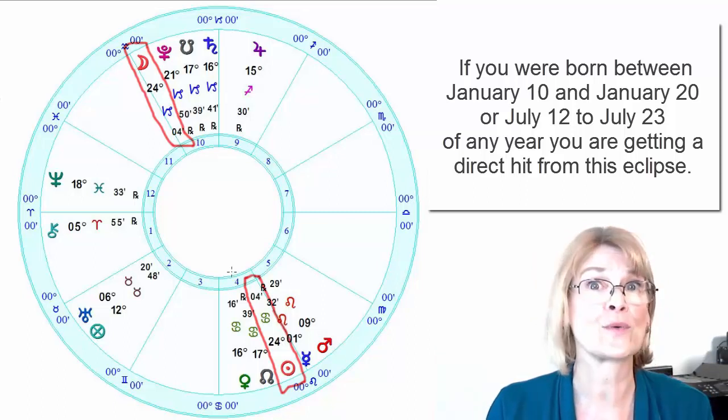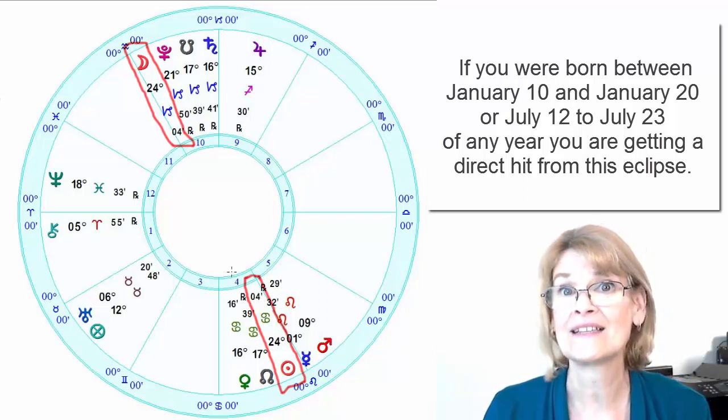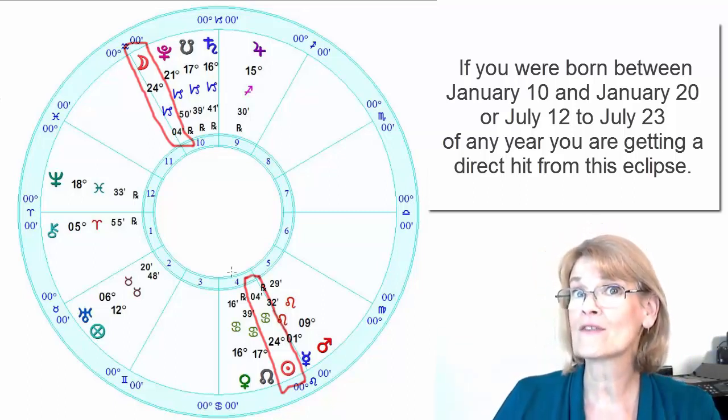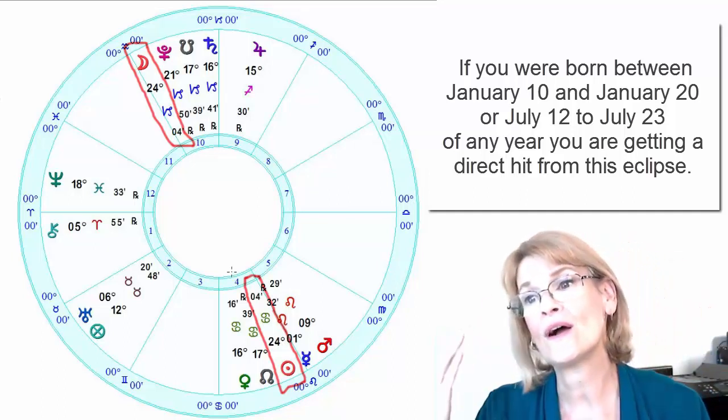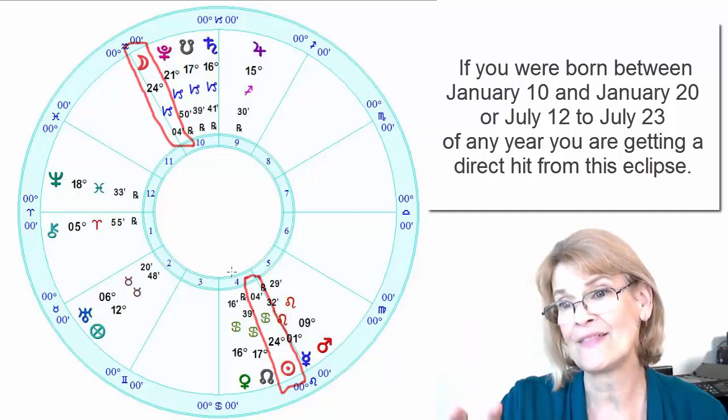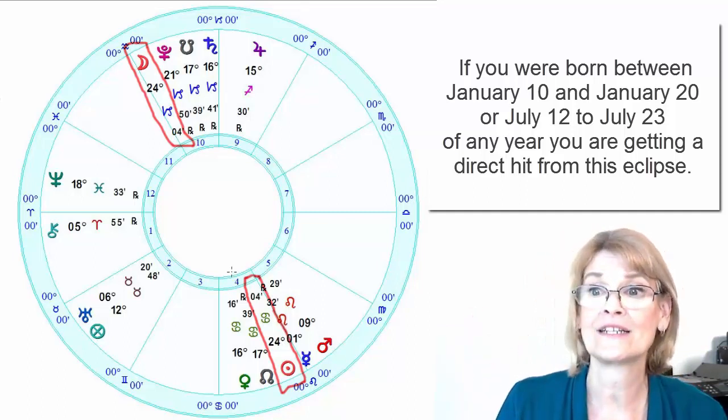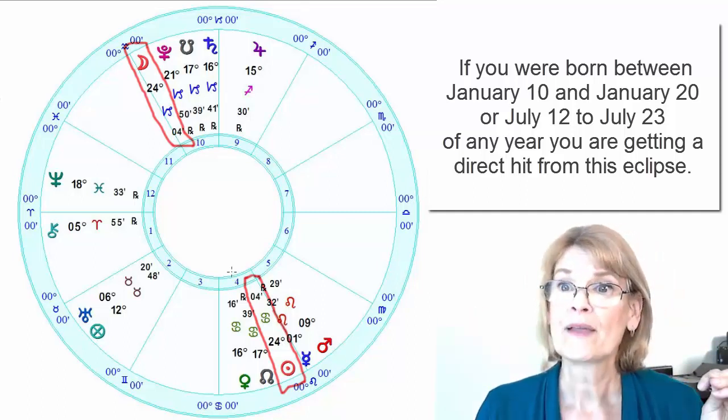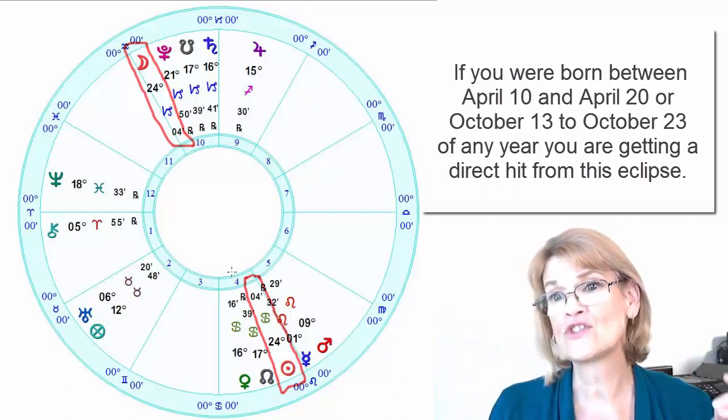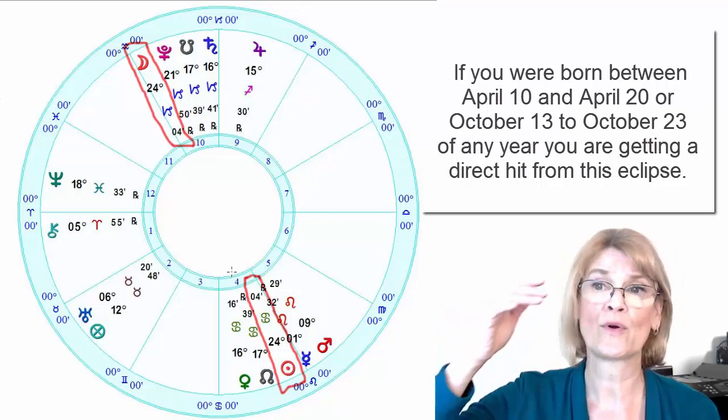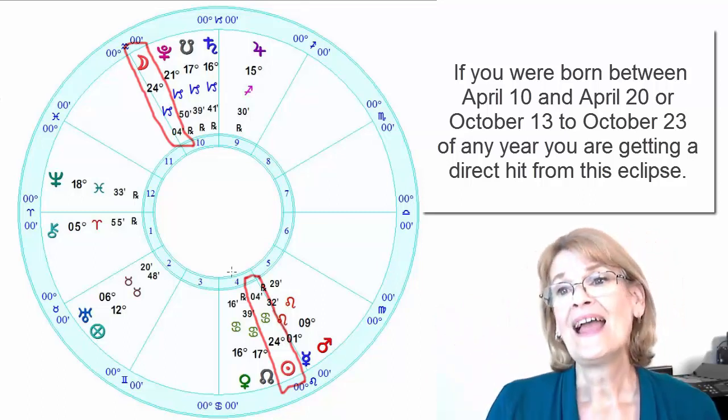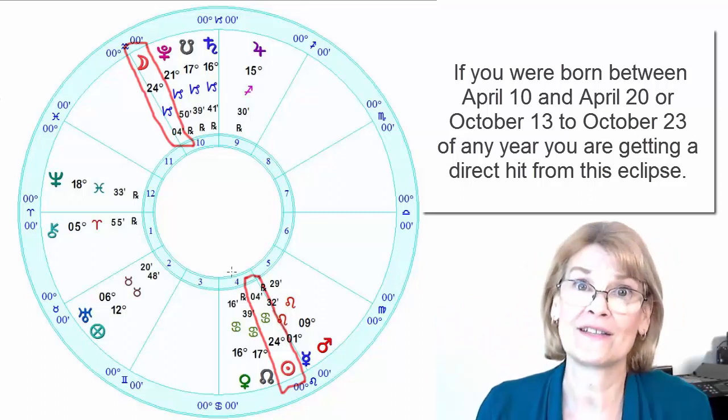I will place the dates of people who are getting a direct hit in the description box below. That is going to be Capricorn natives. You're going to get a direct hit. Of course, this sun is in Cancer. So Cancer natives, I'm going to put the dates, your birth dates in there. And so you can see if you're getting direct hit in addition, because of the square energy, it also has some people born under the sign of Aries and some people born under the sign of Libra. And that's for sun sign hits.